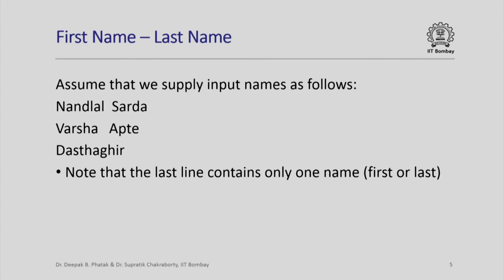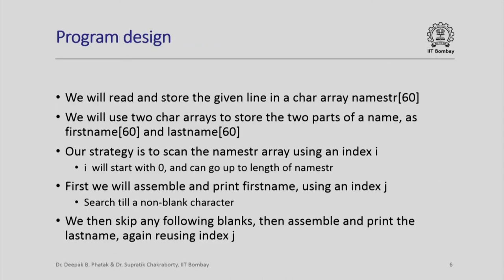We obviously expect to write a program which will handle all these possible variations in the user input. We design our program by saying that first we will read and store the given line in some character array. Let us call this namestr. We will choose the size 60 because we do not expect two parts of a name, first name and last name together including intermediate blanks, to be more than 60 characters long.